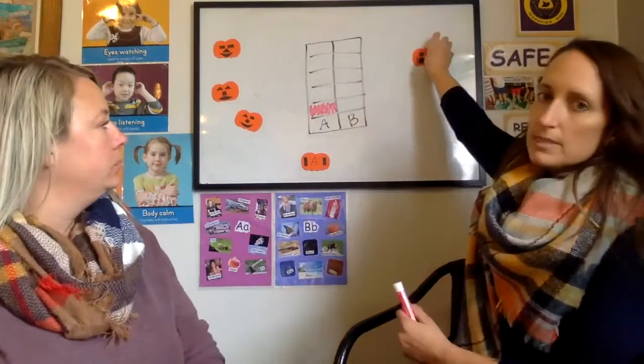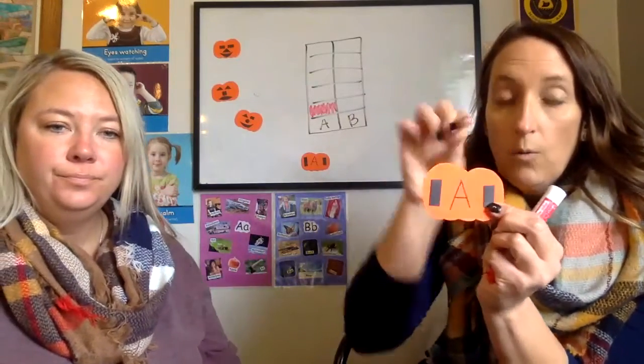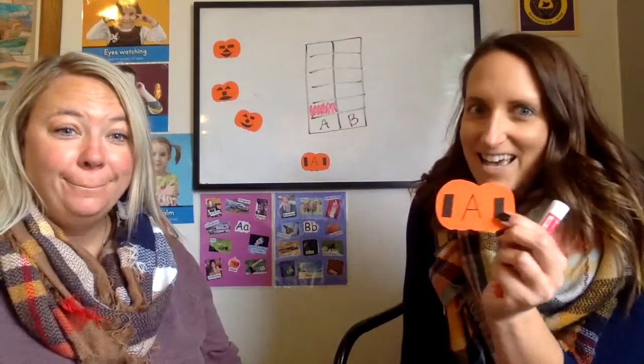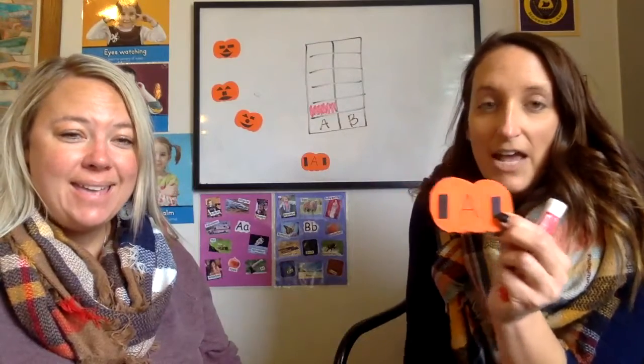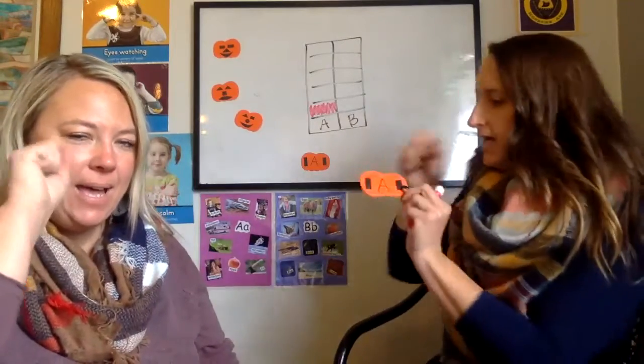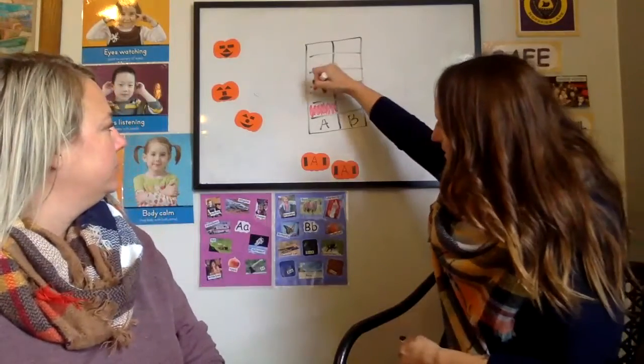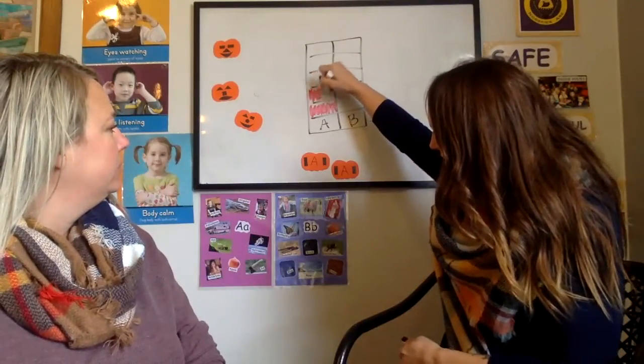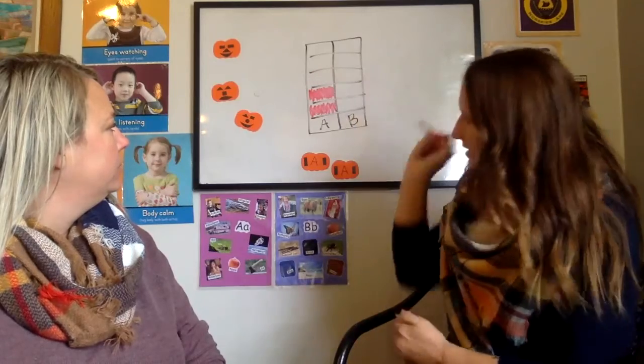Next one. Let's see what this pumpkin has. Oh, what is that again? Letter A, A, A, A. So I'm going to color the next box above the A. There we go.